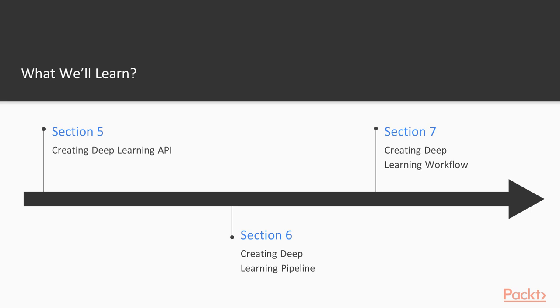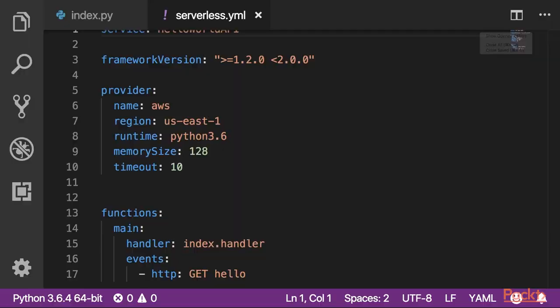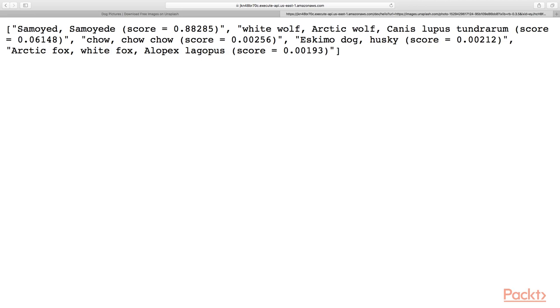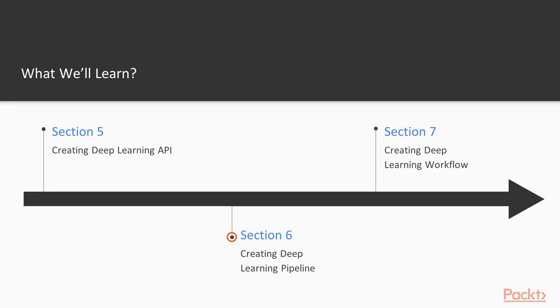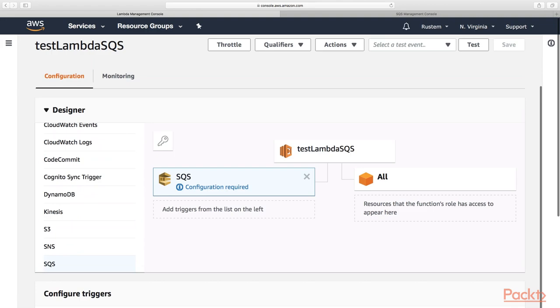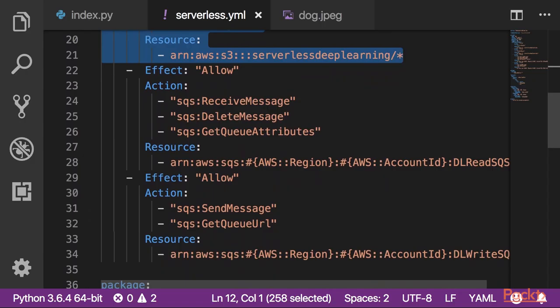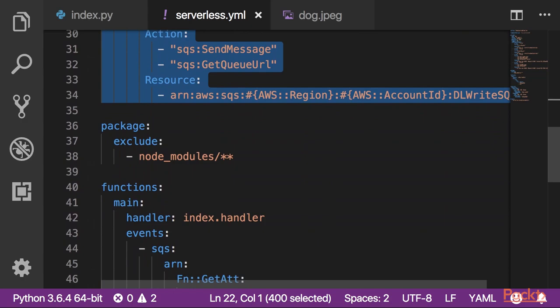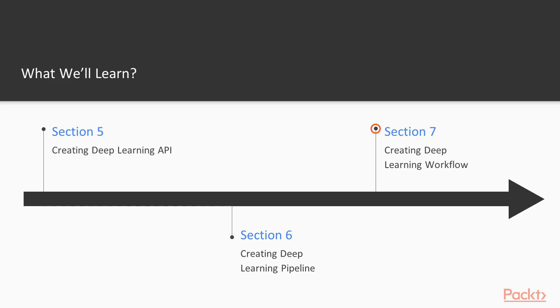In the next three sections, we will build a number of applications which will utilize the serverless deep learning approach. In section 5, we will make a deep learning API, covering AWS API Gateway service and exploring how to deploy everything in a convenient way. In section 6, we will make a deep learning pipeline, covering AWS Simple Queue Service and exploring how to use it with AWS Lambda and how to deploy the application.